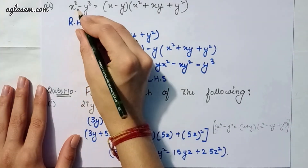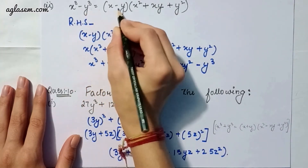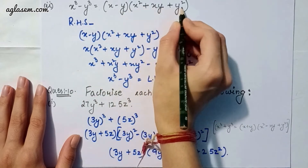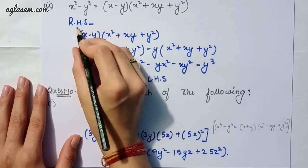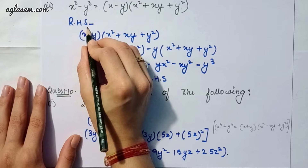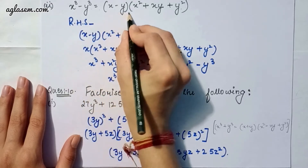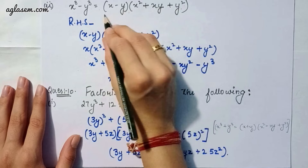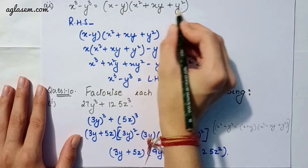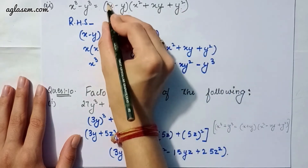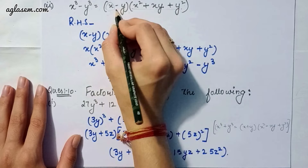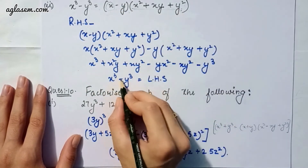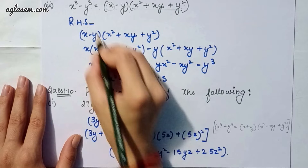Moving to the second part, which says x³ - y³ = (x - y)(x² + xy + y²). We take the right hand side: (x - y)(x² + xy + y²). We multiply x by the whole bracket and minus y by the whole bracket, and our answer will be x³ - y³, which equals the left hand side. It is verified.